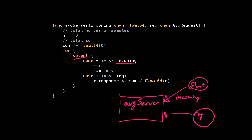Then if it gets a request on the request channel, it computes the average—the sum divided by the total number of data elements it's seeing—and then it sends that on the response channel.